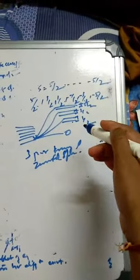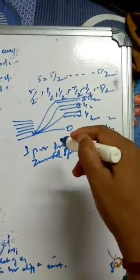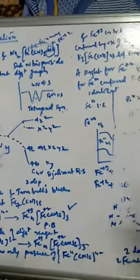Hope you understood these two concepts and some examples of Mössbauer spectroscopy. Up to date we have completed Mössbauer spectroscopy as well as ESR/EPR. The last part remaining is NQR — nuclear quadrupole resonance — and once we complete that small part, we will have completed the fourth unit. Hope you understood — have a nice time, thank you.